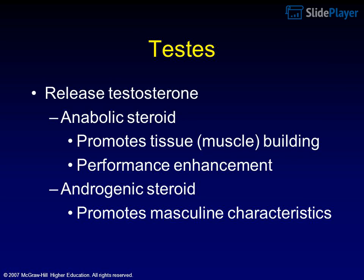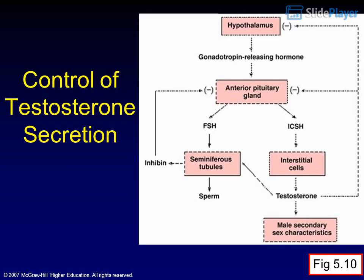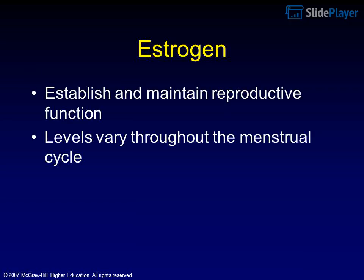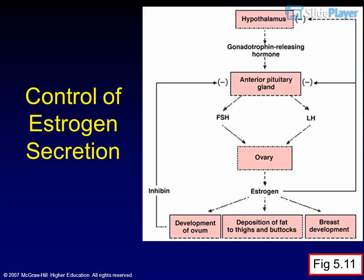The testes release testosterone, an anabolic steroid that promotes tissue and muscle building and performance enhancement. As an androgenic steroid, it also promotes masculine characteristics. Estrogen establishes and maintains reproductive function, with levels varying throughout the menstrual cycle.